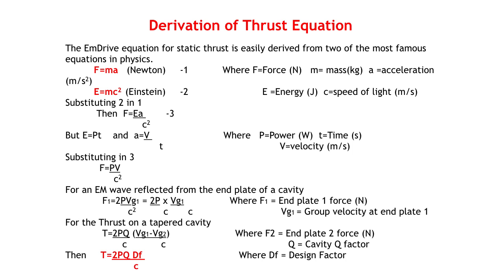So substituting these equations in equation three gives F equals PV over C squared. Now for an electromagnetic wave reflected from the end plate of the cavity, the force is doubled, because there is the force of the impacting wave plus the reaction force of the reflected wave. So we get F1 equals 2P Vg1 over C squared. This can be written as F1 equals 2P over C times Vg1 over C. For the total thrust on the tapered cavity, T equals 2PQ over C times Vg1 minus Vg2 over C.